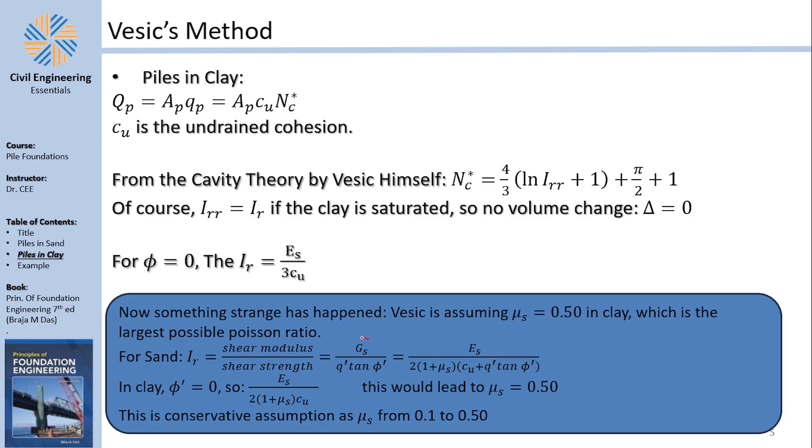Now, we agree that the shear modulus is going to be replaced by the elastic modulus over 2 multiplied by 1 + μs. That's from mechanics and materials. We should also agree that from the Mohr-Coulomb failure envelope, the shear strength of soil is Cu + σ tan ϕ. Now, in imperfect clay, this becomes zero, and the only shear is Cu. So the equation should look something like this: Es divided by 2 multiplied by 1 + μs over Cu.